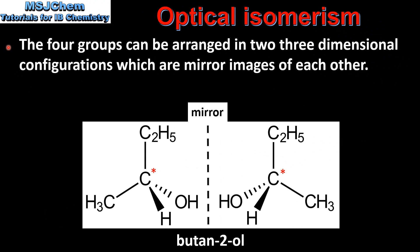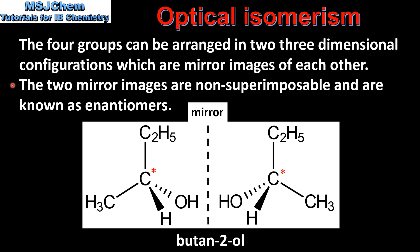The four groups can be arranged in two three-dimensional configurations which are mirror images of each other. The two mirror images are non-superimposable and are known as enantiomers.